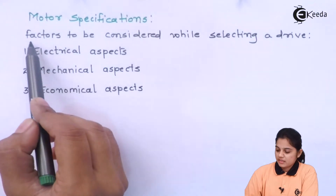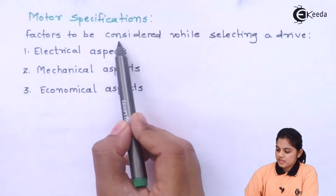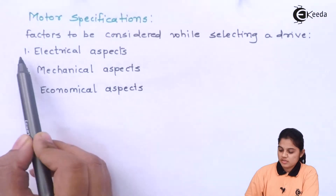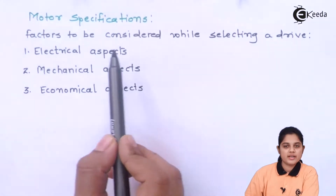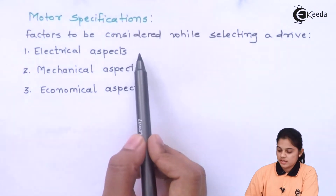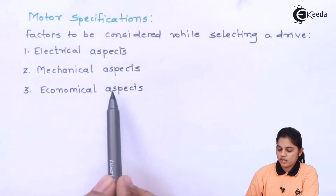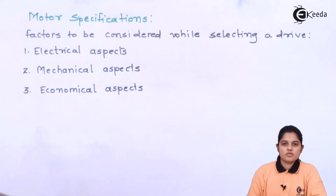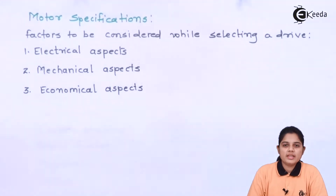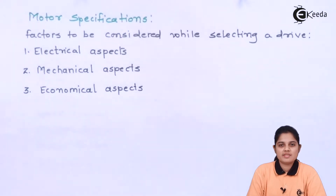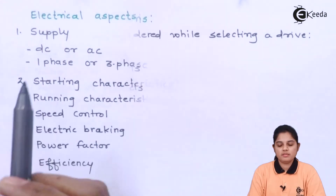There are some factors to be considered while selecting a drive motor. The first is electrical aspects, the second is mechanical aspects, and the third is economical aspects. These are the three main aspects, and there are different parameters within each that need to be considered. We will see them one by one.